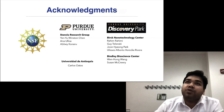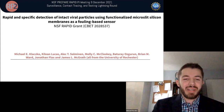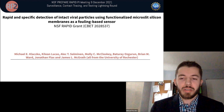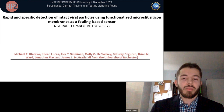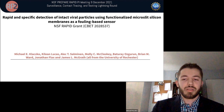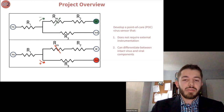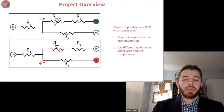Hello everybody, my name is Michael Closco and I work in Dr. James McGrath's lab at the University of Rochester. Today I will be talking about our work supported by an NSF RAPID grant, which culminated in an accepted paper titled 'Rapid and Specific Detection of Intact Viral Particles Using Functionalized Micro-Slit Silicon Membranes as a Fouling-Based Sensor.' The overall vision was to create a new type of point-of-care diagnostic to help supply the overwhelming demand for rapid SARS-CoV-2 diagnostics.